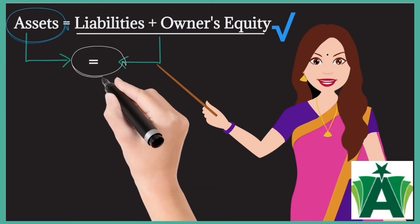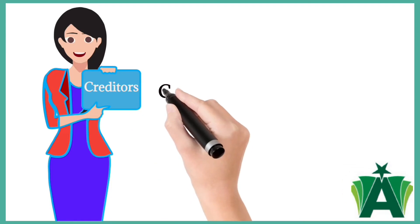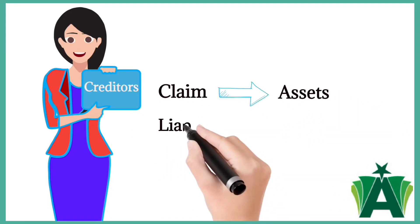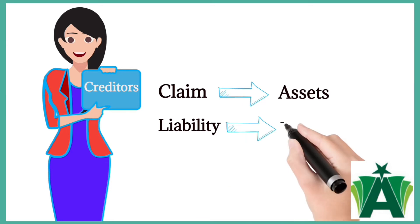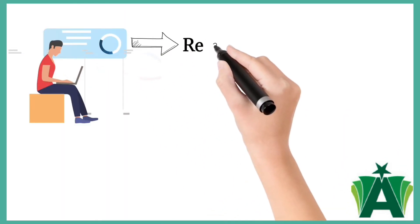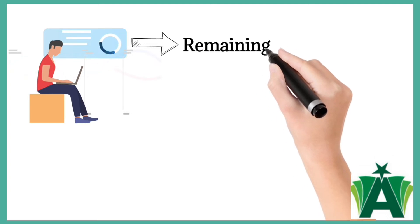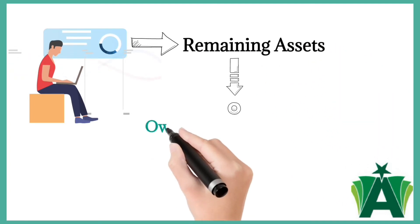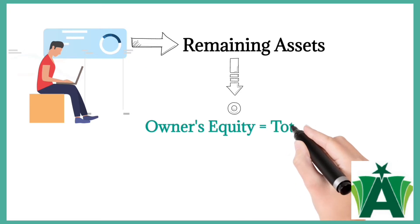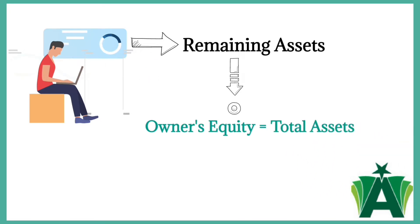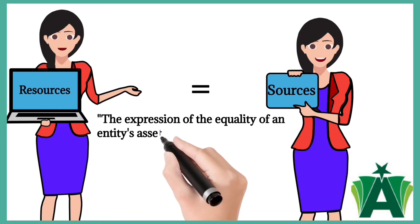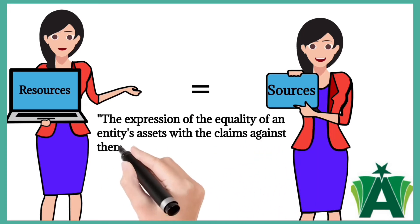The two sides of the accounting equation must always be equal. The creditors have a claim against the assets of a business until the liabilities have been paid. The owner has a claim against the remaining assets of the business. If no liabilities exist, then the owner's equity will equal the total assets.